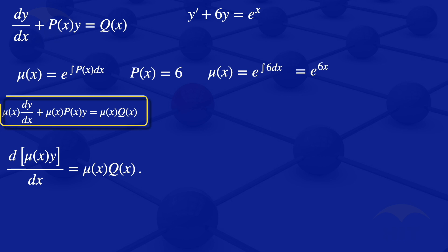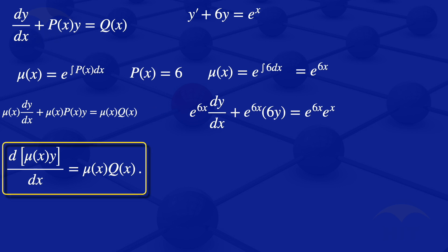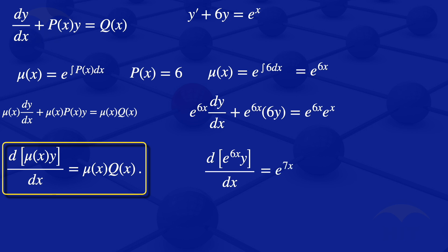The next step is to multiply the equation by the integrating factor e^(6x). This gives us e^(6x)·(dy/dx) + e^(6x)·6y = e^(6x)·e^x. We can write the left-hand side in compact form as d/dx[e^(6x)·y]. On the right-hand side, e^(6x)·e^x = e^(7x), so we have d/dx[e^(6x)·y] = e^(7x).